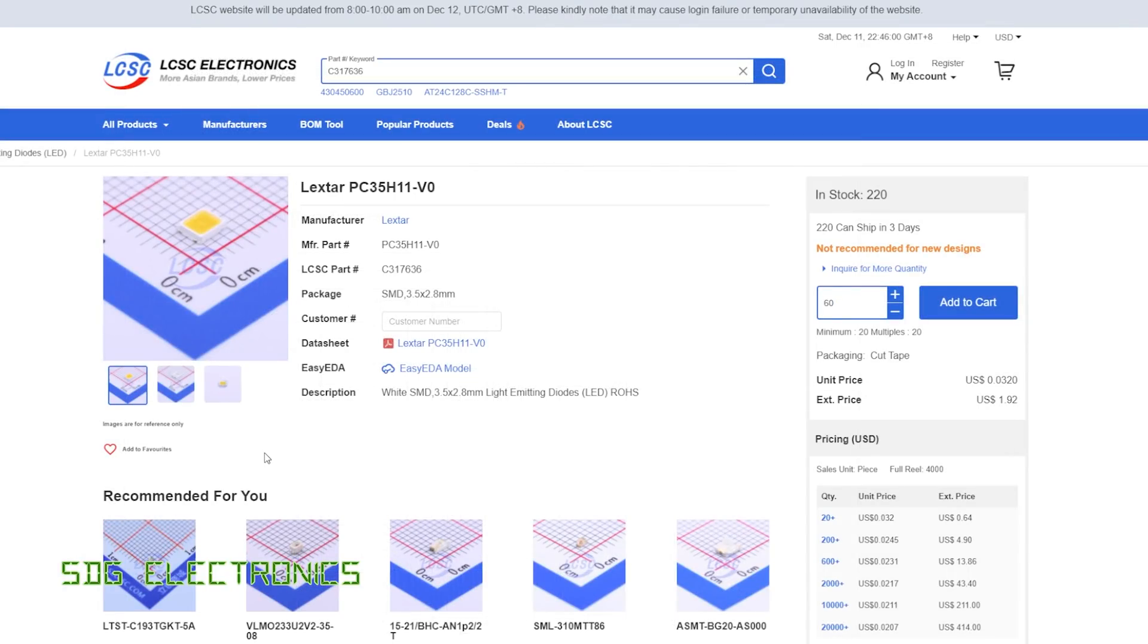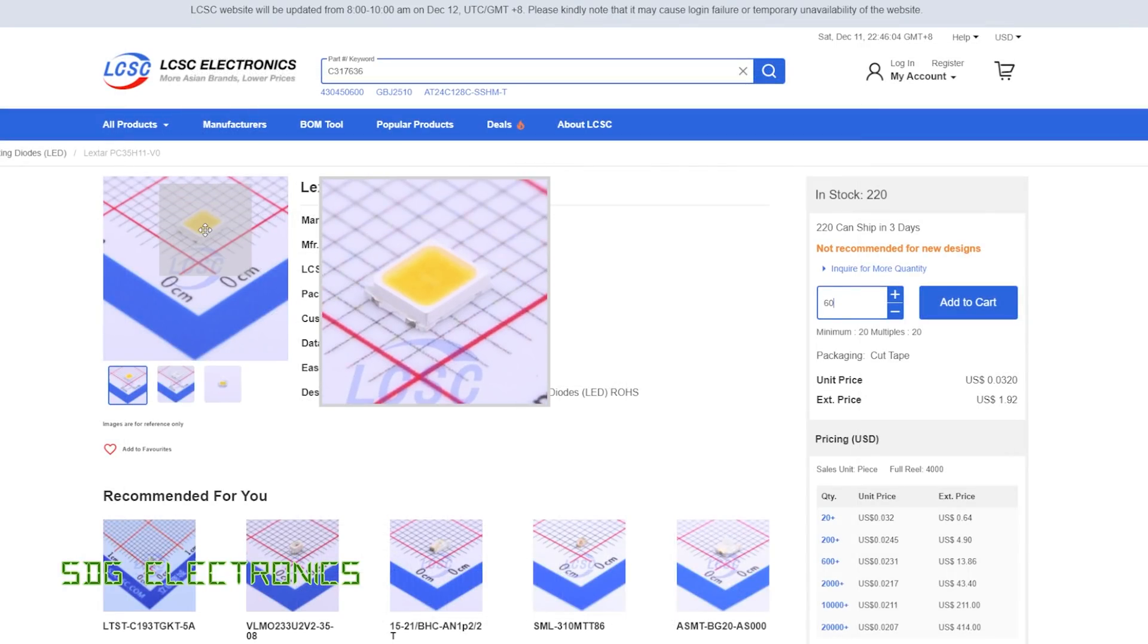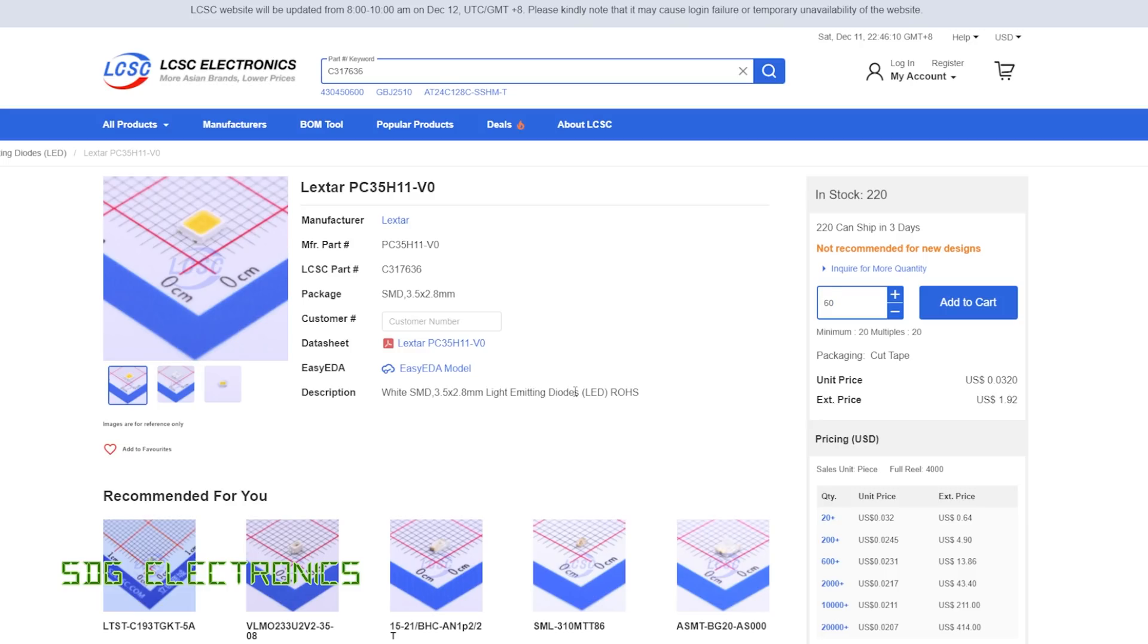The LEDs themselves are from LCSC, a fairly generic 3.5 by 2.8 millimeter LED. These are extremely warm white 2700 kelvin which is ideal for this particular scene. They're designed to run anywhere up to 150 milliamps giving about 60 or 70 lumens. Also they're extremely cheap. For 60 of them it only cost $1.92.